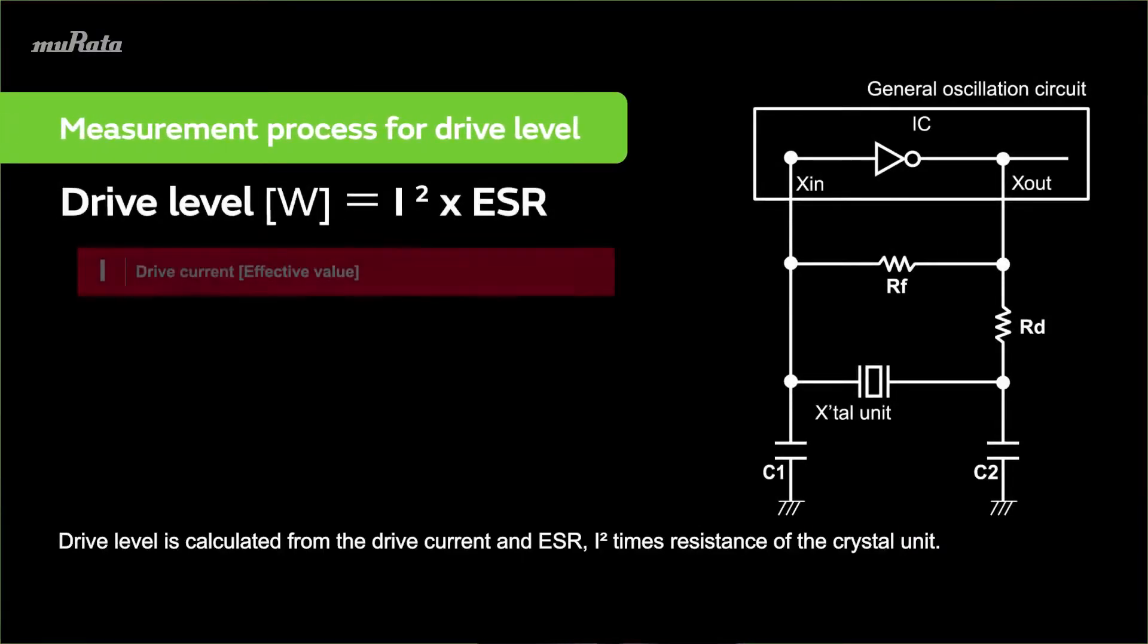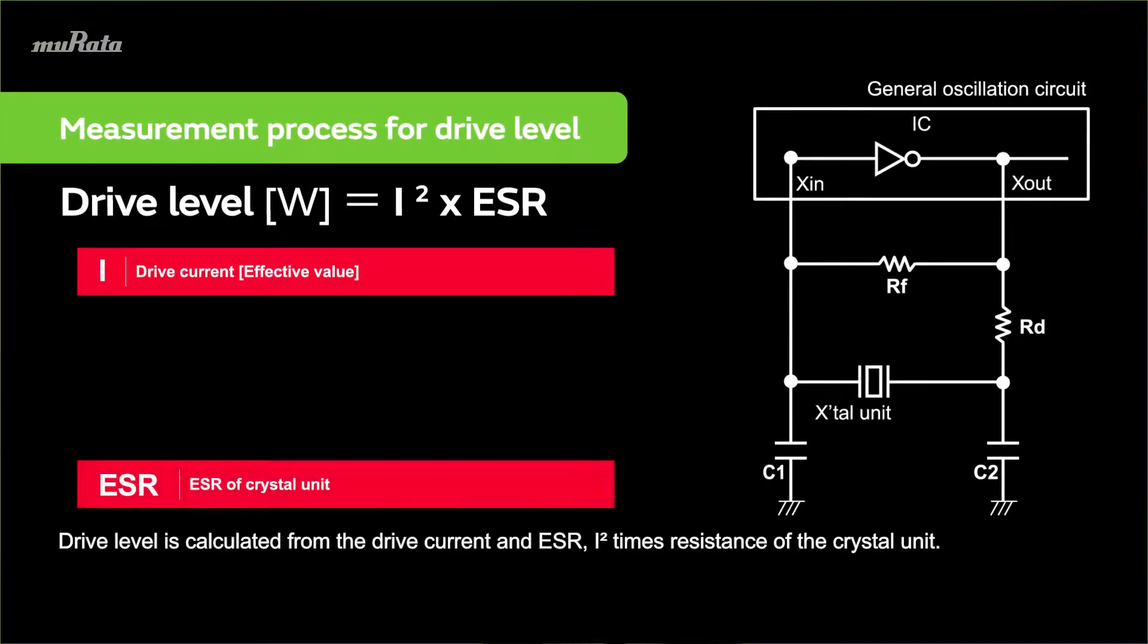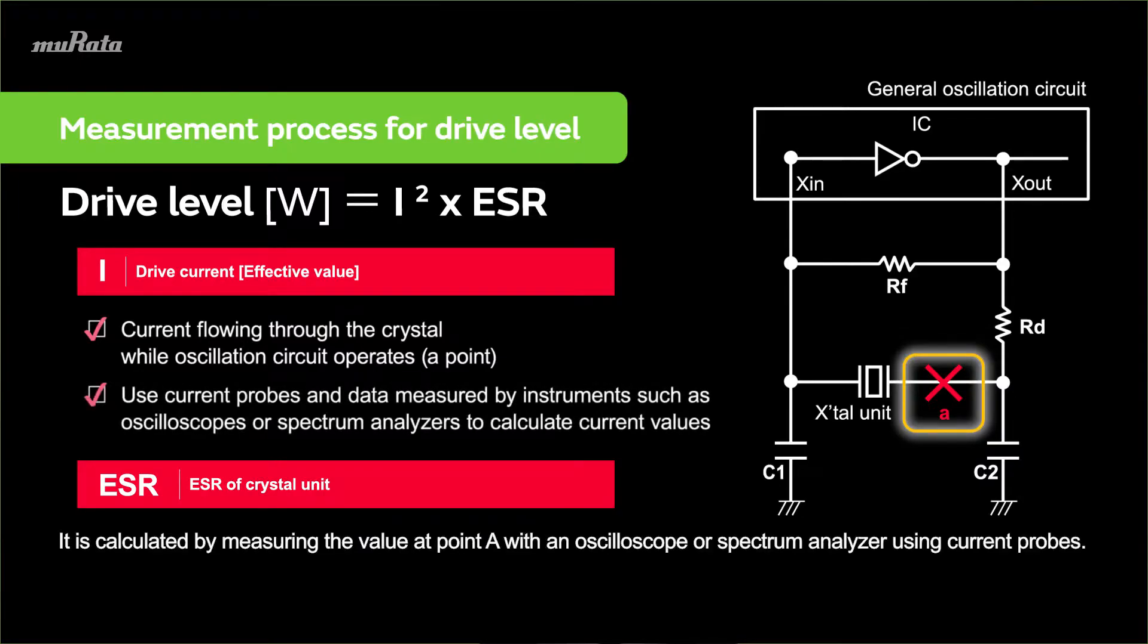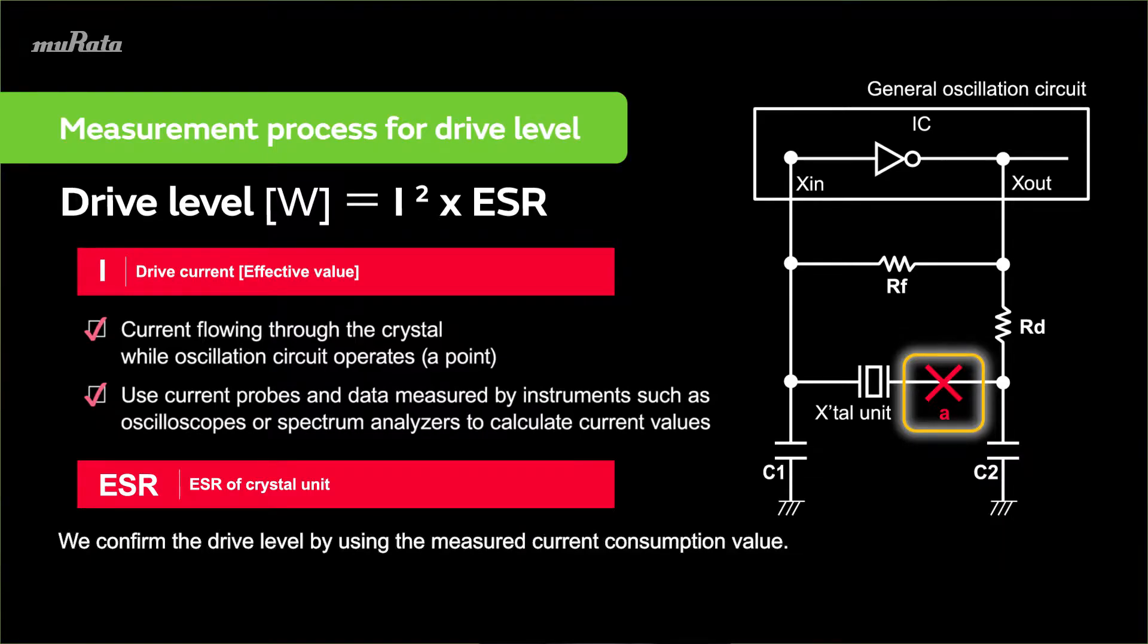Drive level is calculated from the drive current and ESR (resistance of the crystal unit). The drive current is the current through the crystal unit while the oscillation circuit operates. It is calculated by measuring the value at point A with an oscilloscope or spectrum analyzer using current probes. We confirm the drive level by using the measured current consumption value.